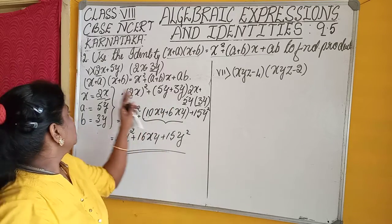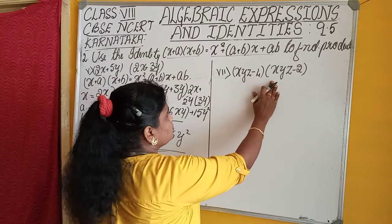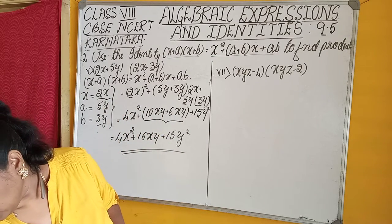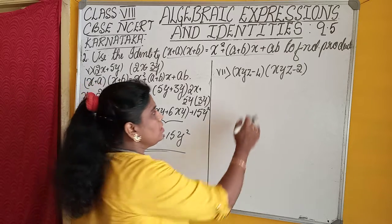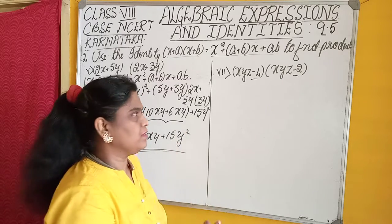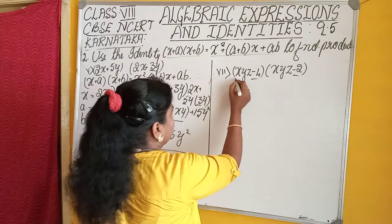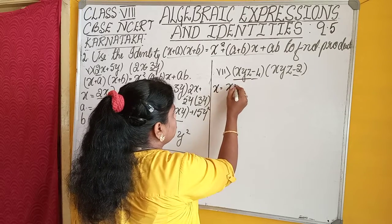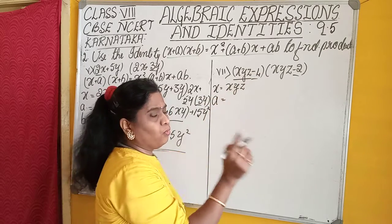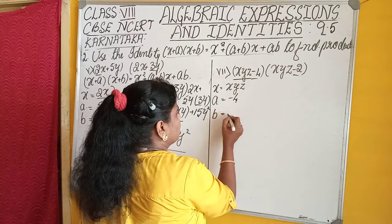Now let us move to problem 7: (xyz−4)(xyz−2). Here both are given with minus. In this case, while writing the values of a and b, we have to concentrate on the symbols. Minus is given, therefore we have to put the minus values. The value of x is xyz, the value of a is minus 4, and b is equal to minus 2.